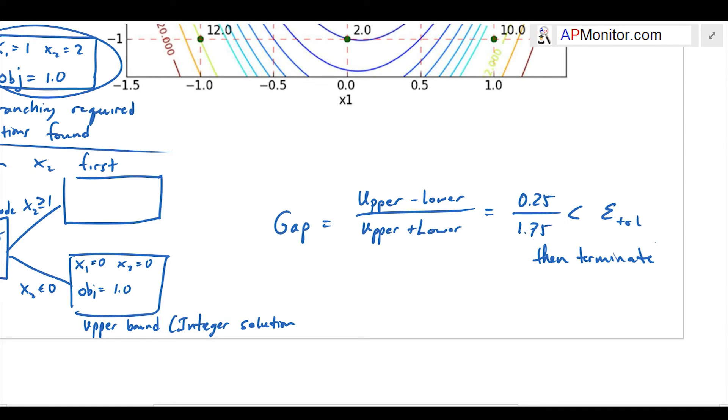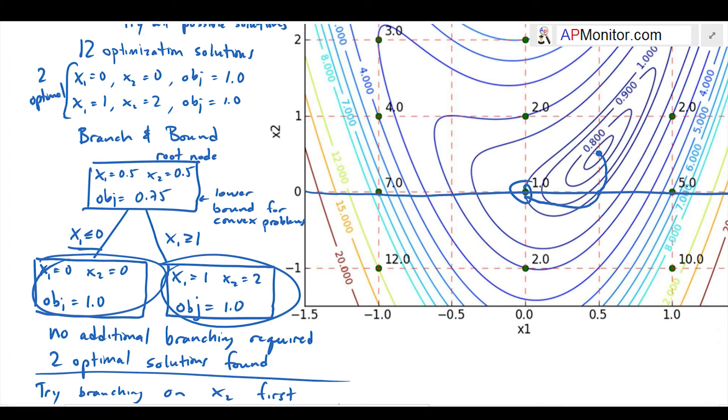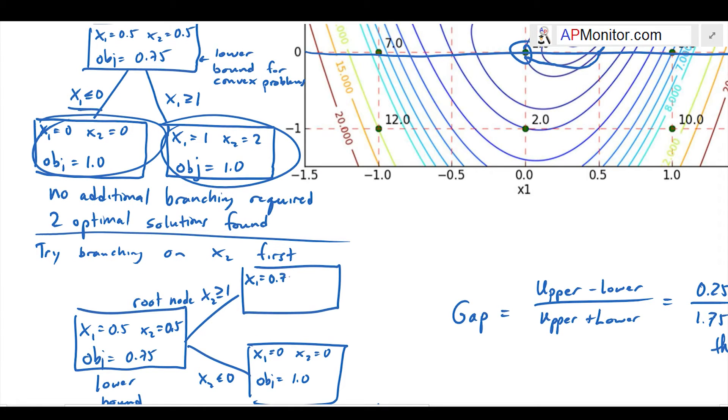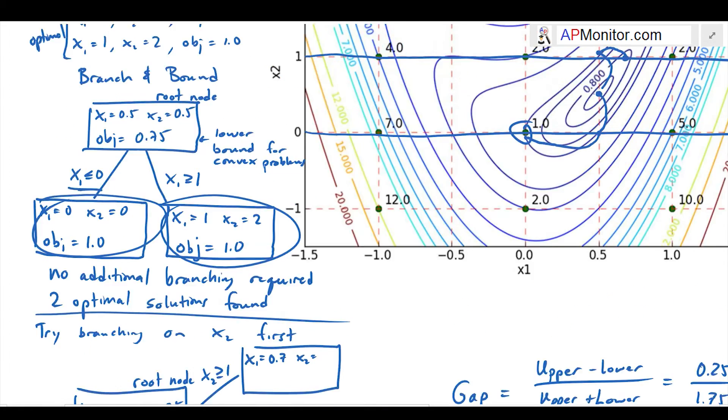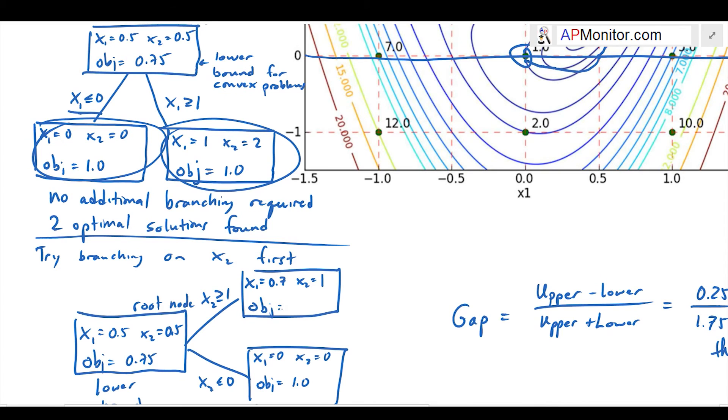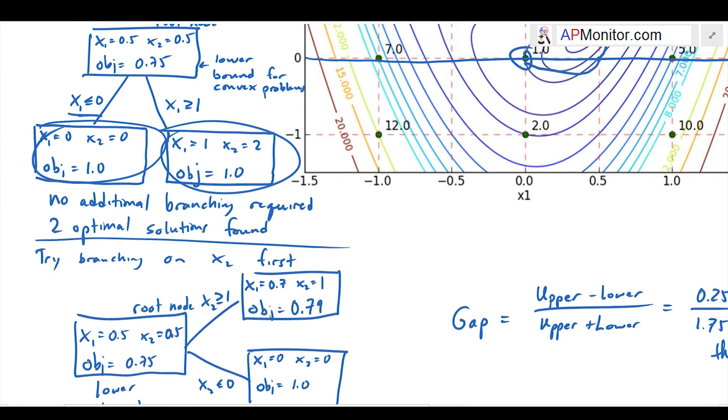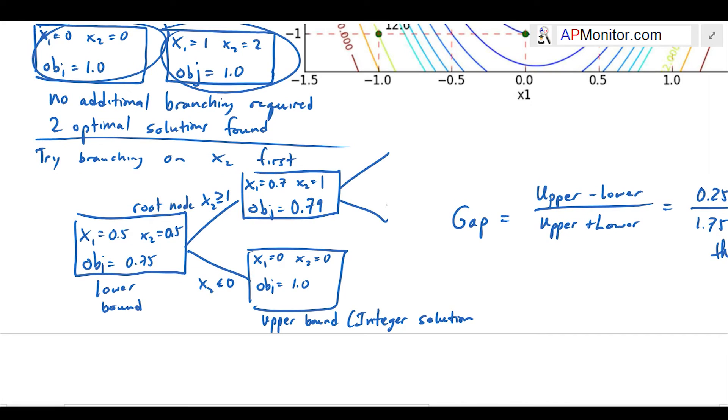Now I'm going to also do it for x2 greater than 1. I came up with a solution about x1 equals 0.7, x2 equals 1, with objective function approximately equal to a little under 0.8. Now I need to branch again. I'm going to have x1 greater than or equal to 1, and then x1 less than or equal to 0.